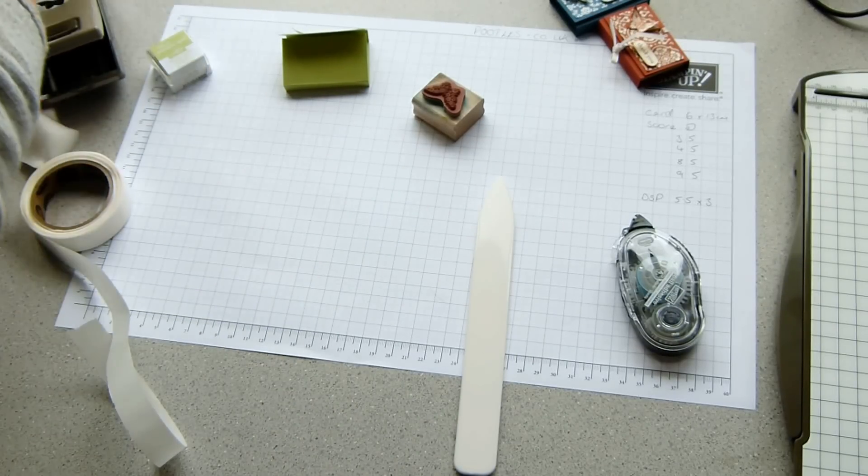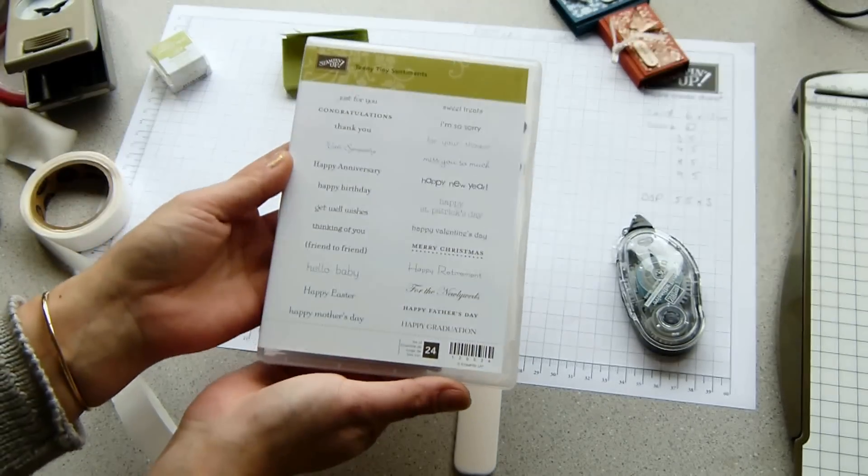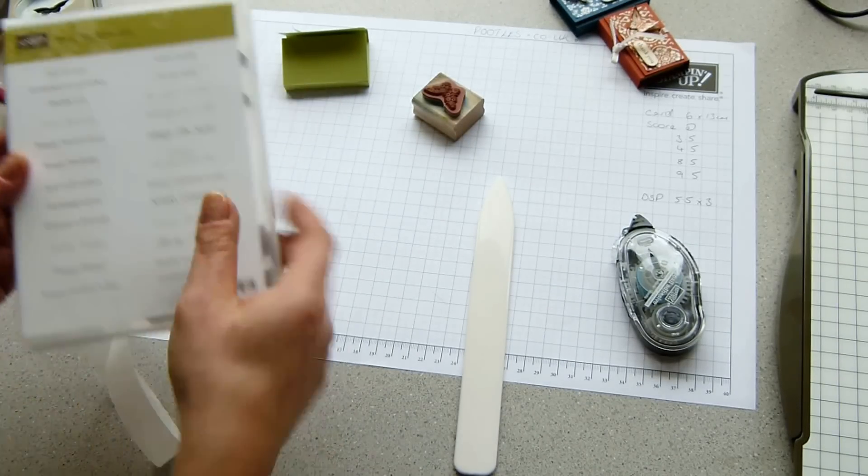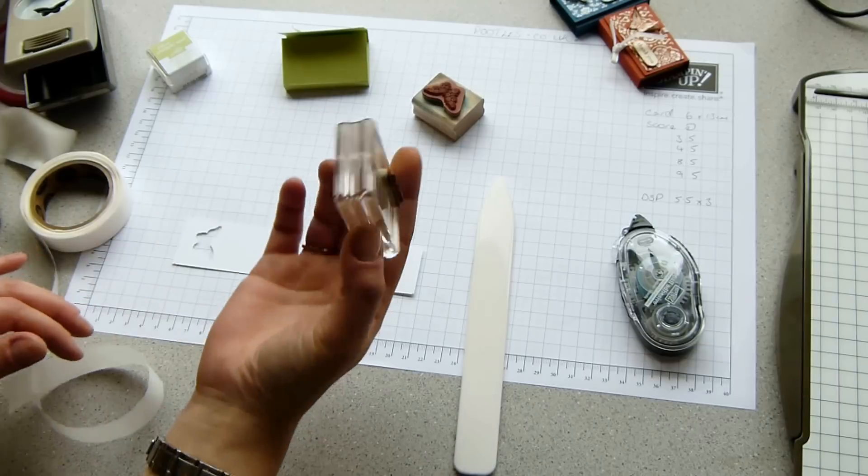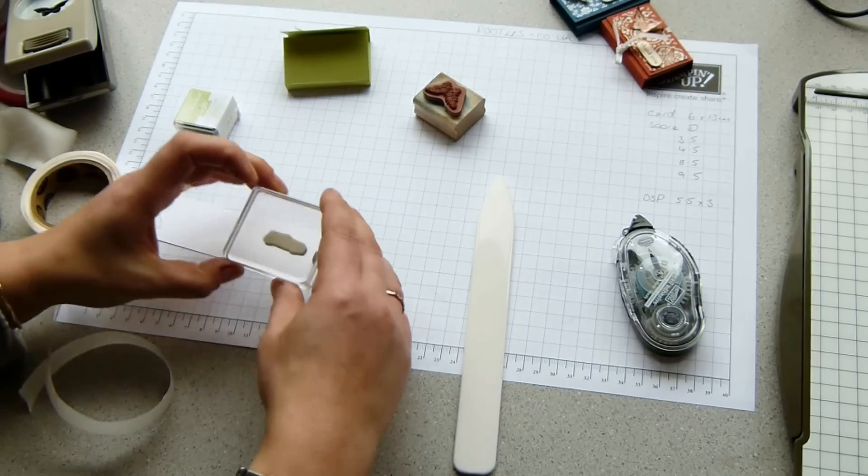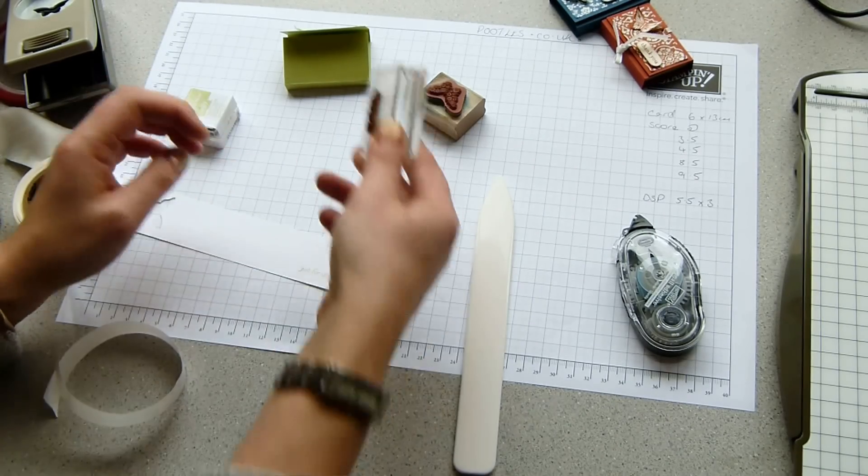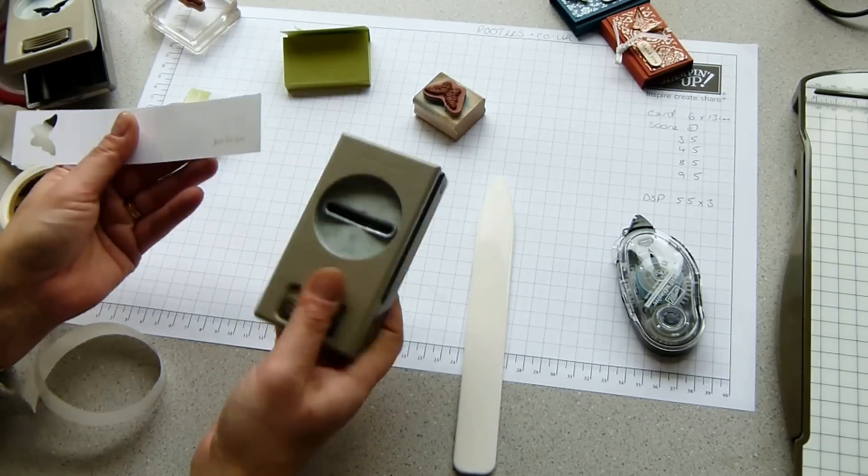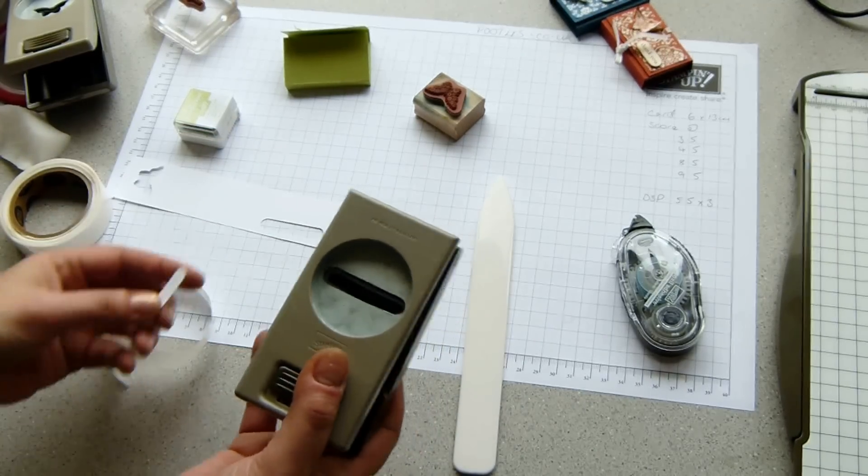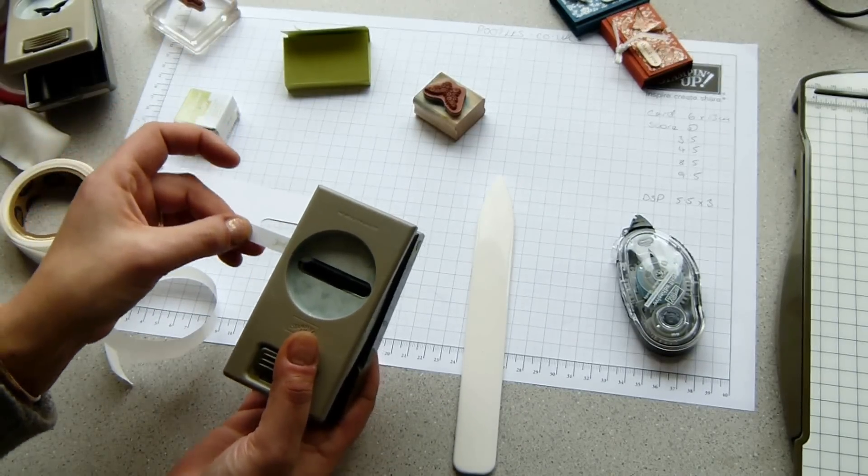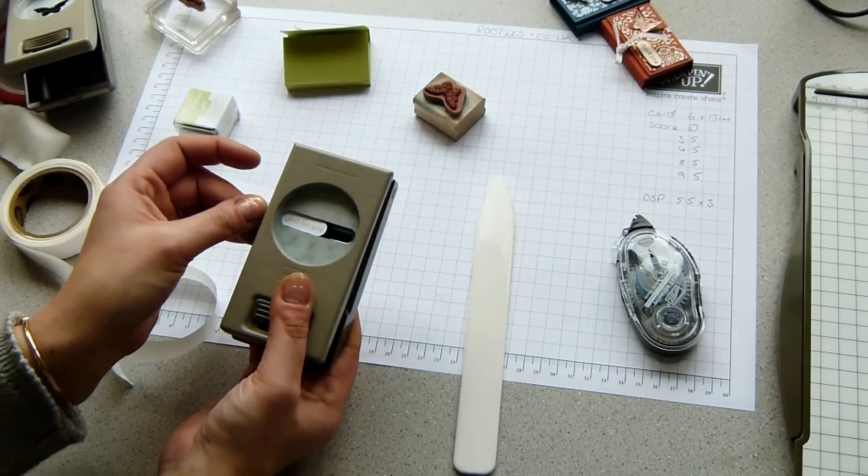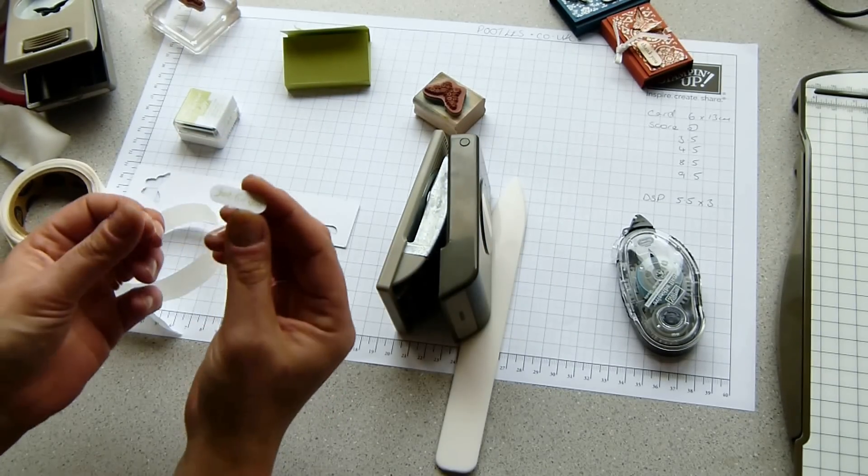And I want to stamp a sentiment. Now this is the teeny tiny sentiment set and I love it. It's got all these little sentiments. And I've chosen just for you, this one here, which I think is lovely. So again, on some Whisper White, and I've already got it prepped up with the same color ink. And I'm going to put that down at the bottom because I'm going to put a word window around it and punch that out. Now I'm going to show you how to make a word window smaller because obviously you can see that's far too long. And all you do is you get hold of the bit that you don't need and pop it in the side and line it up and just pop it out. So that's giving you a smaller window.